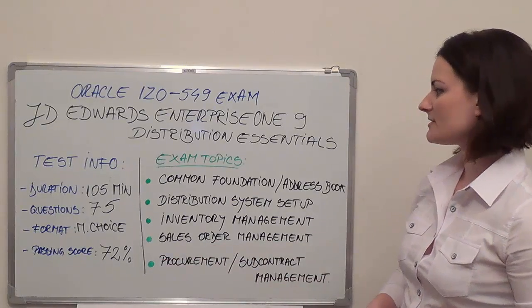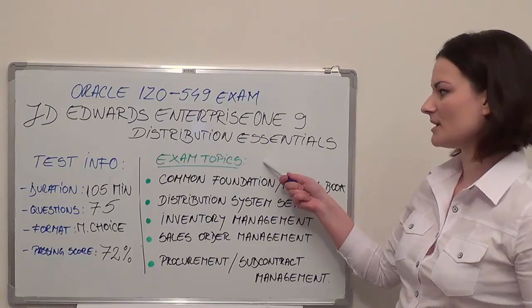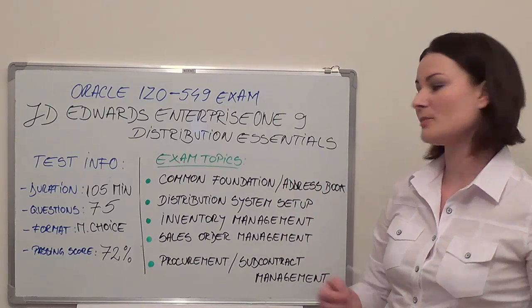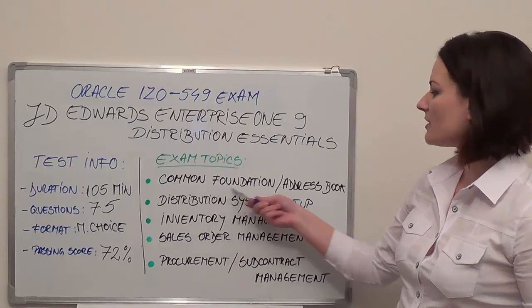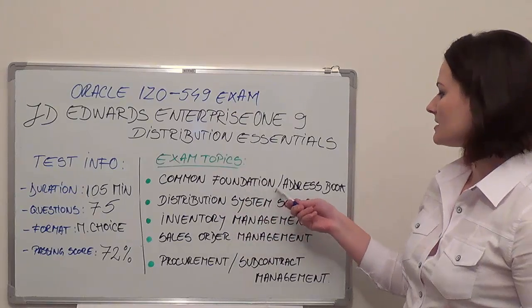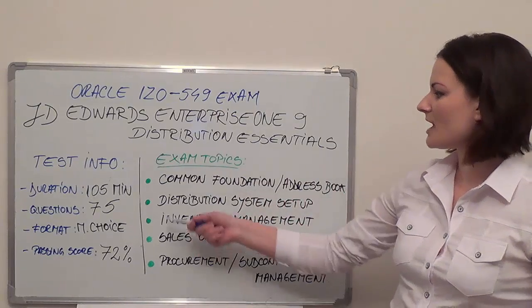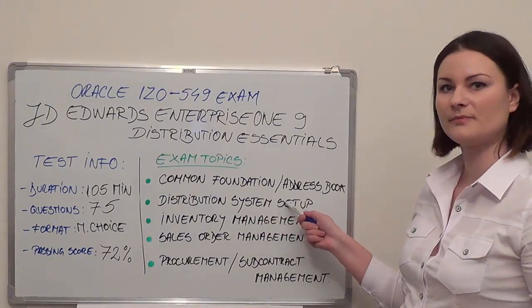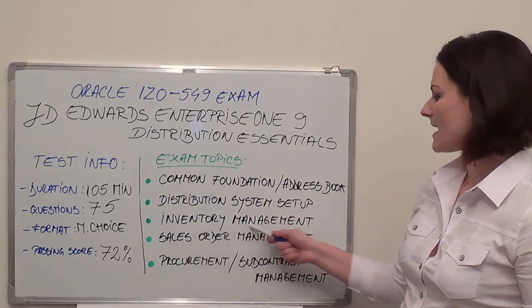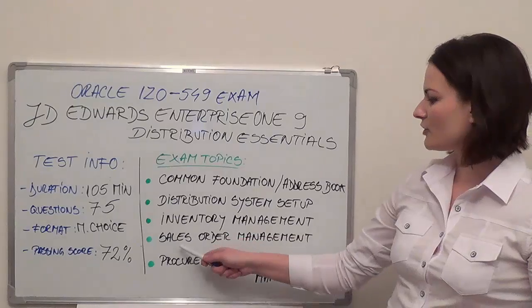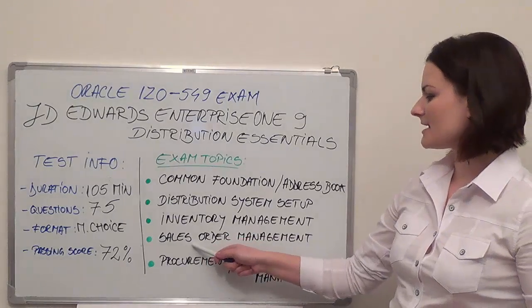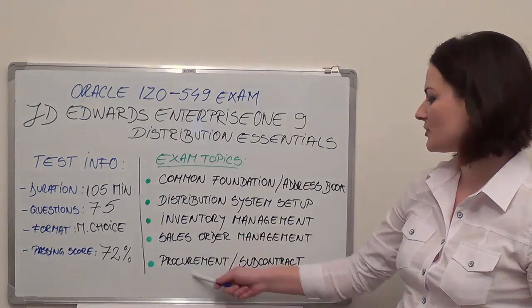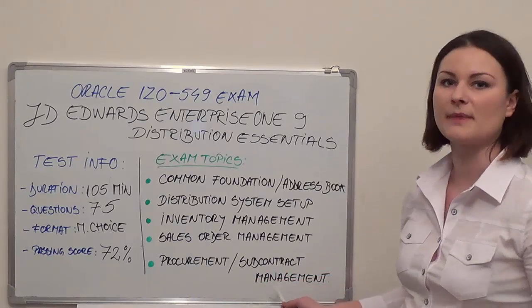Some objectives may also include the following five topics, which I'm now going to present one by one. First topic: Common Foundation/Address Book. Next: Distribution System Setup, then Inventory Management. The fourth one is Sales Order Management, and the last one is Procurement/Subcontract Management.